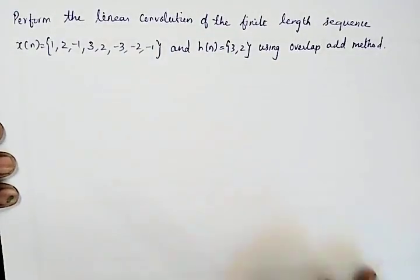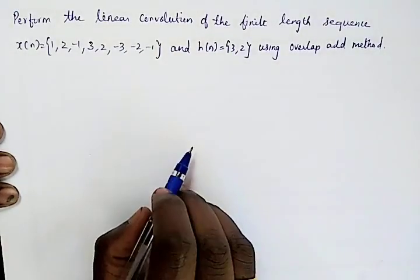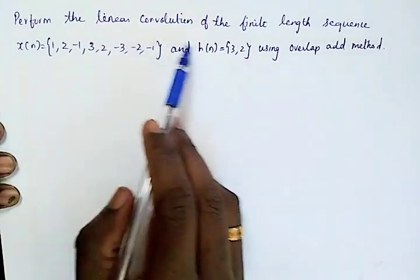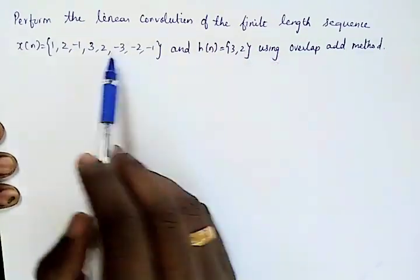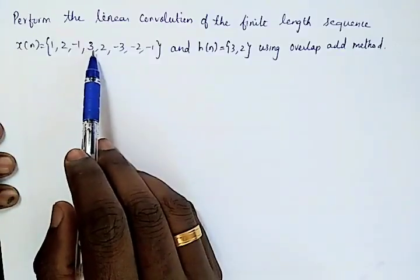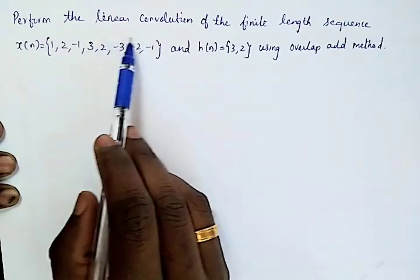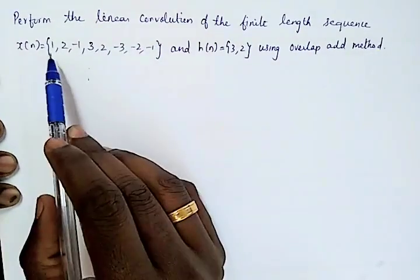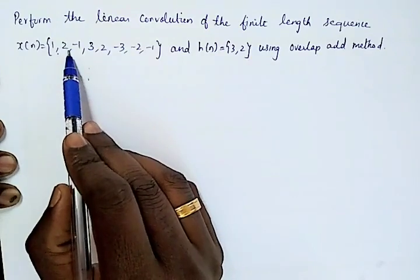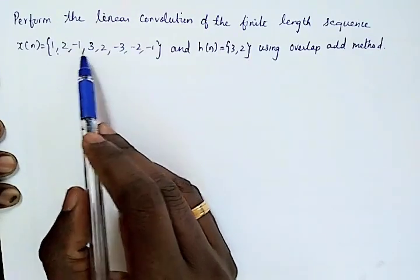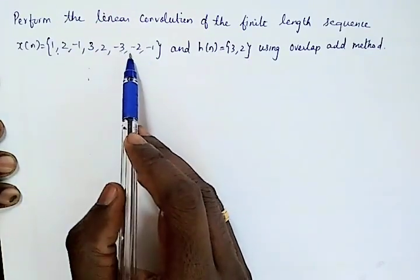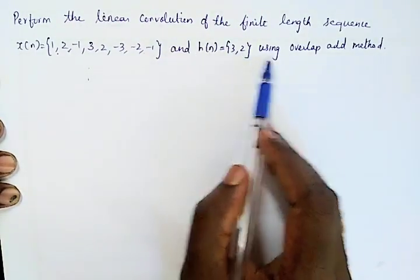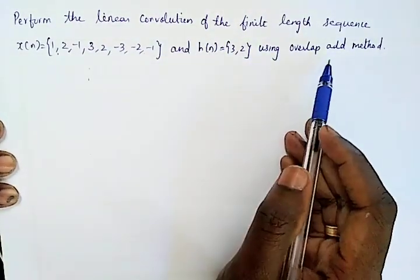In this exam video, let's solve a problem for linear convolution using the overlap-add method. The question is: perform the linear convolution of the finite-length sequence x[n] = {1, 2, -1, 3, 2, -3, -2, -1} and h[n] = {3, 2} using the overlap-add method.